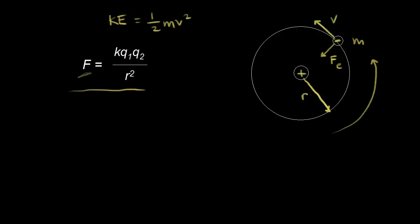The electric force is given by Coulomb's law. The magnitude of the electric force is equal to K times Q1 — the charge on the proton — times Q2 — the charge on the electron — divided by R squared, where R is the distance between the two charges. By Newton's second law, force equals mass times acceleration, so the electric force equals the mass of the electron times the centripetal acceleration.